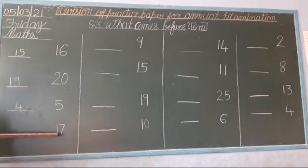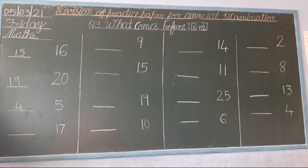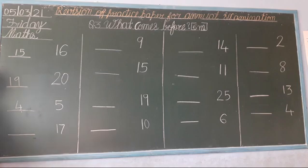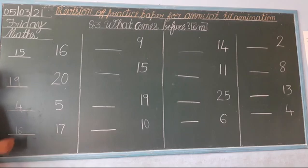Next, which number is this? 1, 7 — 17. So: 11, 12, 13, 14, 15, 16, 17. Which number comes before? 1, 6 — 16. Right here: 16. Okay?